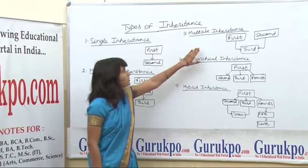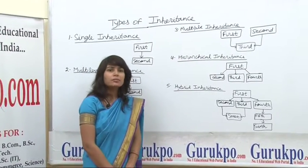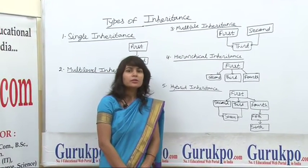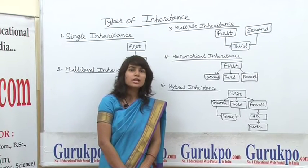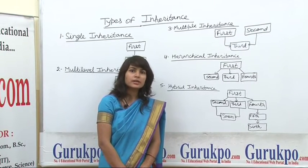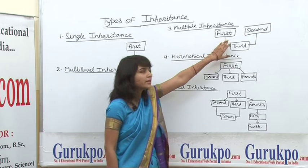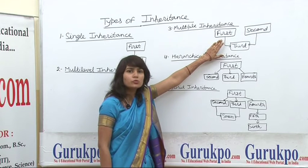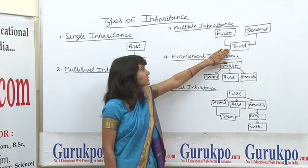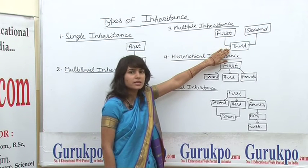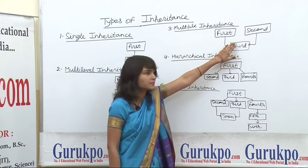Third is multiple inheritance. In multiple inheritance there may be two base classes which can be used by a derived class. Here we can see that first and second are the two base classes, and third is the derived class which uses all the features of these two classes.